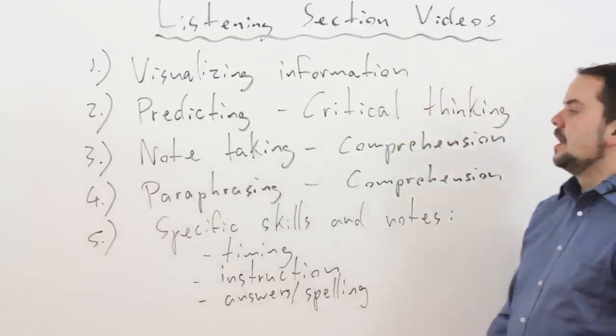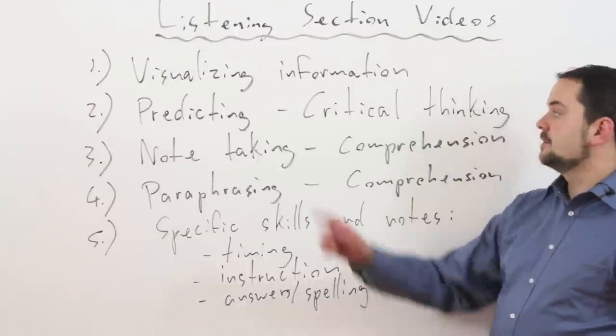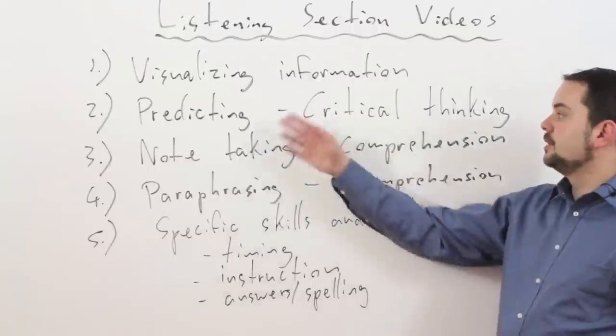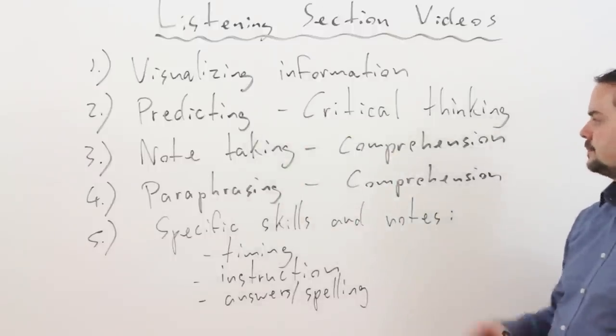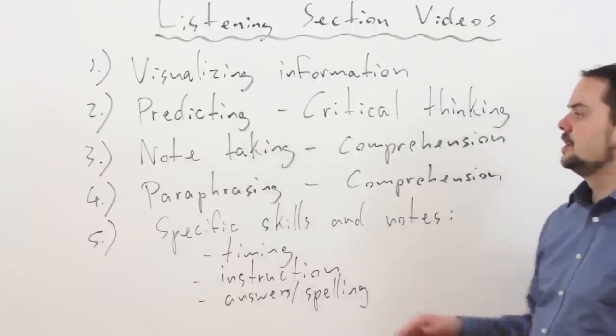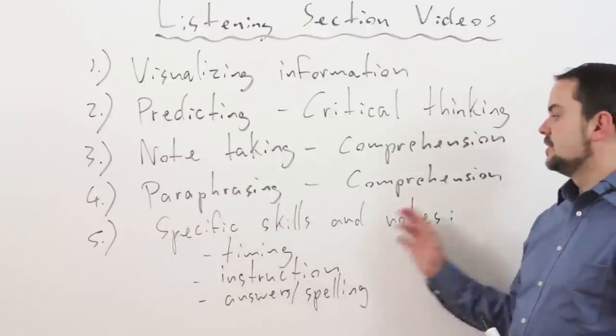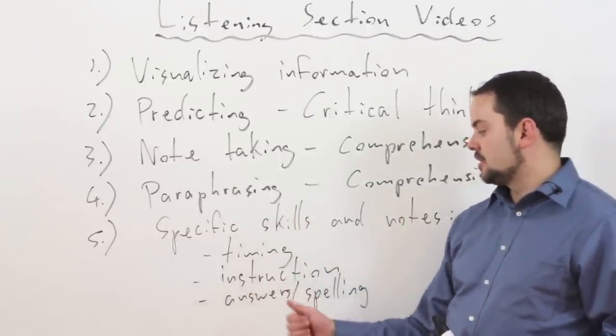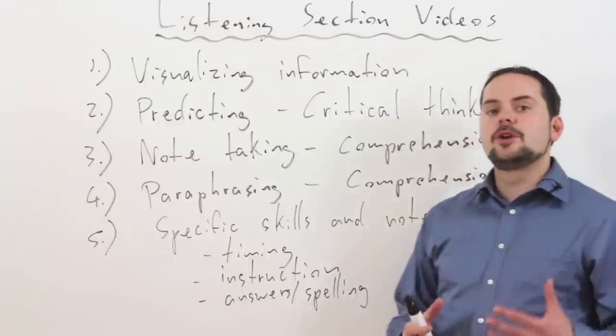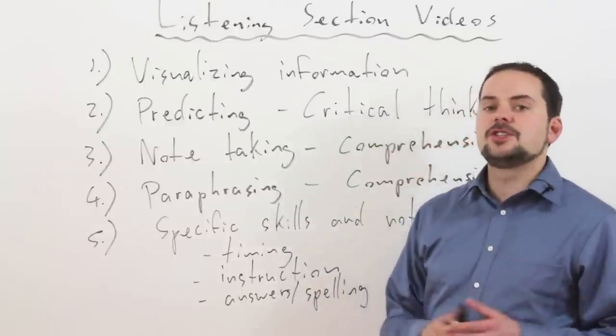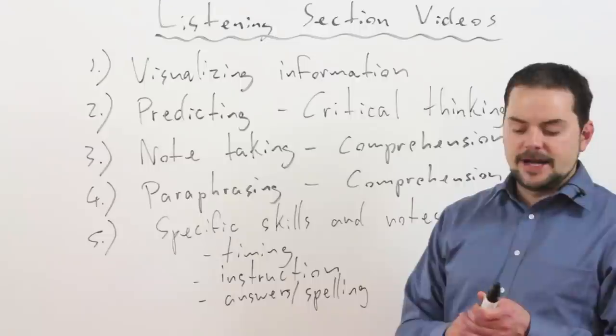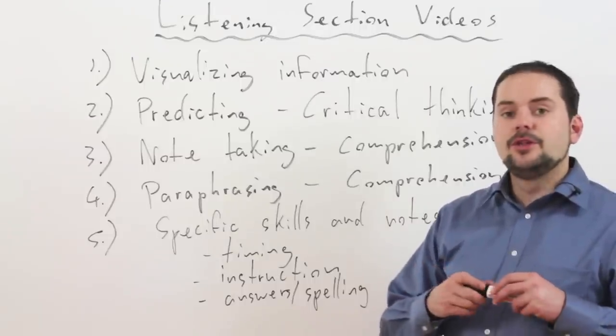So these lessons will be broken into these five parts: visualizing information, predicting critical thinking, note-taking and comprehension, paraphrasing and comprehension, and number five, specific skills and notes which include timing, instructions, answers, and spelling. Then we're going to look at a few different kinds of questions, just so you're very clear on how you should be answering those.